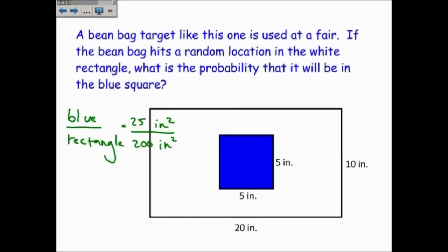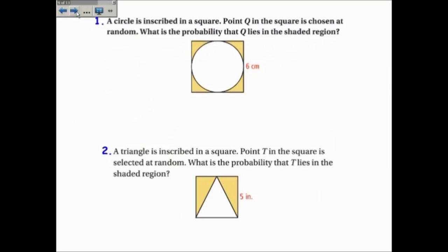25 divided by 200 is 0.125. Again, there's no units. It's 0.125 or 12.5%. Or if you want to leave it as a fraction, it's 1 eighth.